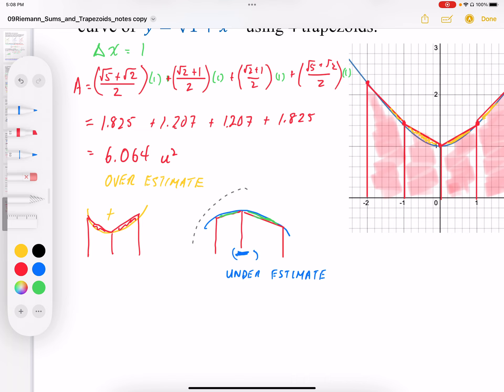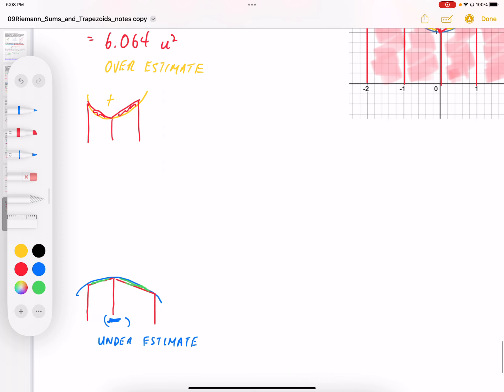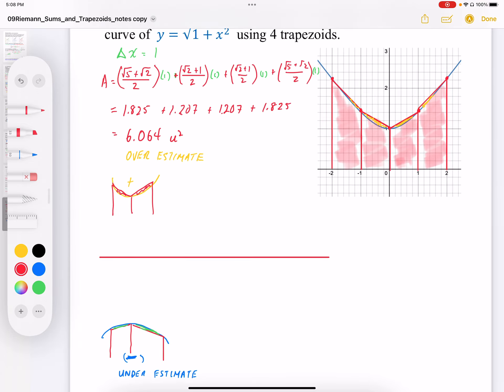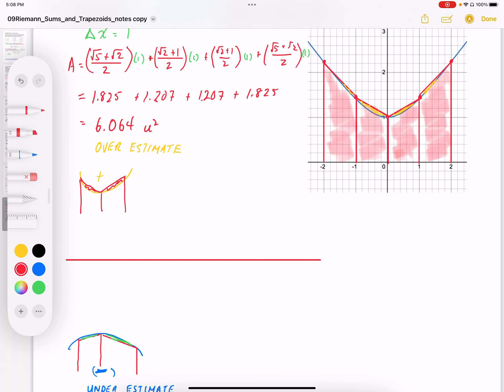So if it's concave down, in this example that I've drawn here, this is a separate example, it's not part of this problem. If it's concave down, then we have an underestimate. In this case, it's concave up. It's an overestimate.